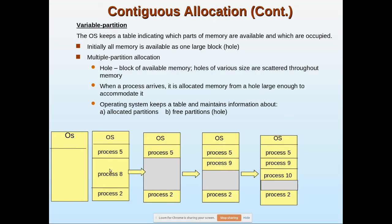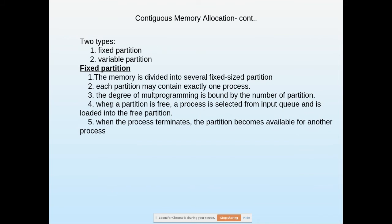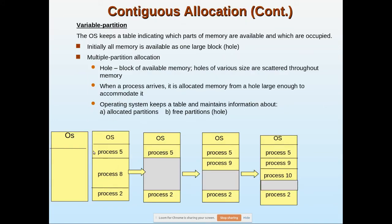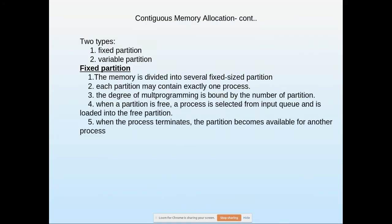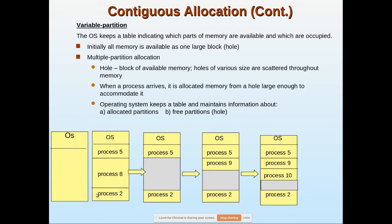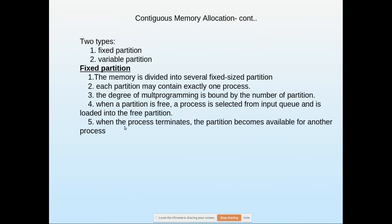Each partition may contain exactly one process. When more than one process resides in main memory, we call it multiprogramming. To achieve multiprogramming we must allocate more than one process in main memory. The degree of multiprogramming is bounded by the number of partitions — if there are only three partitions, then only three processes can be placed in memory.